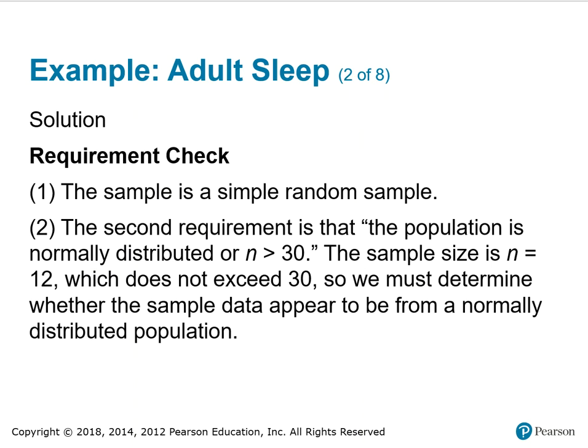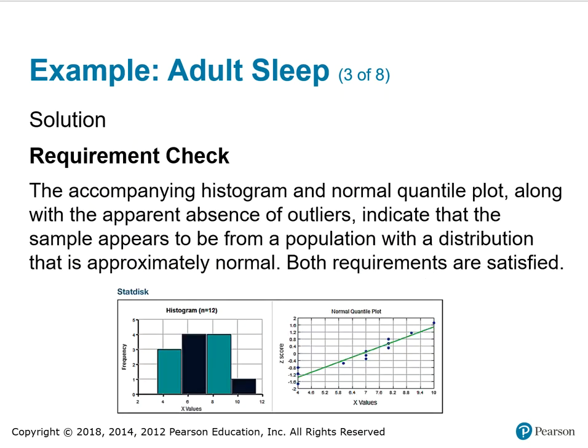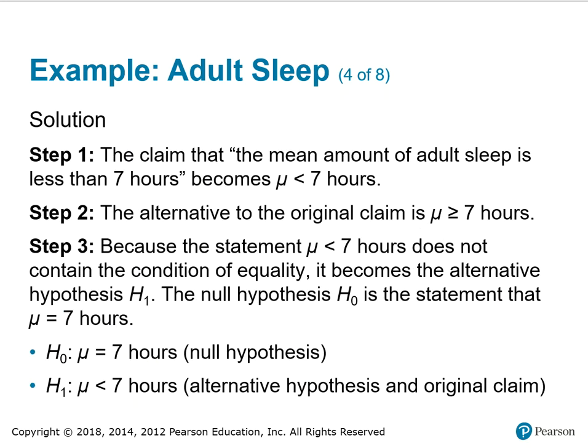The requirement check: the sample is a simple random sample. The second requirement is that the population is normally distributed or n is greater than 30. Since n is 12, which doesn't exceed 30, we have to determine whether the sample data appear to be from a normally distributed population. We look at the histogram and check the normal quantile plot. They both appear, along with the apparent absence of outliers, to indicate that the sample appears to be from a population with an approximately normal distribution. So both requirements are satisfied. The claim that the mean amount of adult sleep is less than 7 hours becomes mu is less than 7 hours — note that it's mu because we're testing a mean hypothesis.